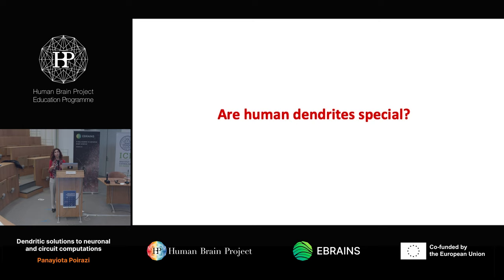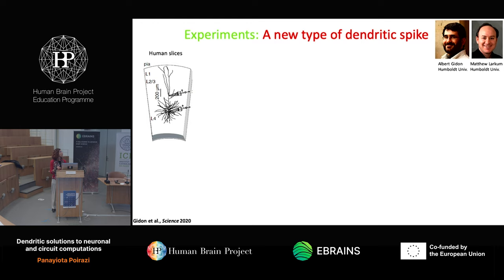The take-home message: dendrites provide single neurons with advanced computing capabilities because they allow these small isolated structures to perform nonlinear integration. So what we wanted to find out next is whether human dendrites have some additional advanced computing capabilities. For this work, we teamed up with Matthew Larkum — and he's better positioned to explain this work than I am, but I will give it a try.